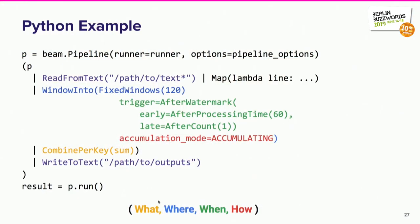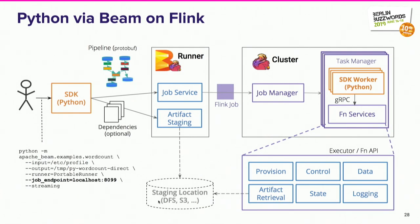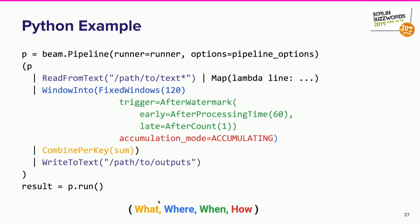If you write something in Python, it looks like this: a simple example reading from a text source, deciding what windowing you want, defining how to trigger results with different types of triggers — there are three examples — and the computation is just a summation, then writing results to a text sink. That gives a feel of what a Python programmer would see. You can plug in your own user code — instead of a summation, perform some other function, call models, use any library you'd like.